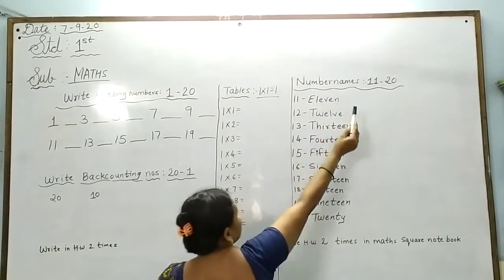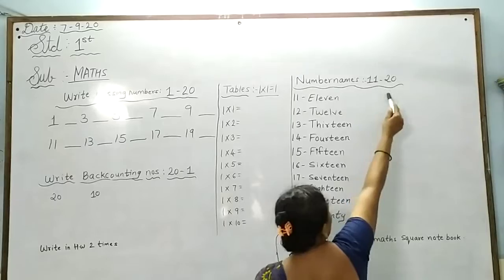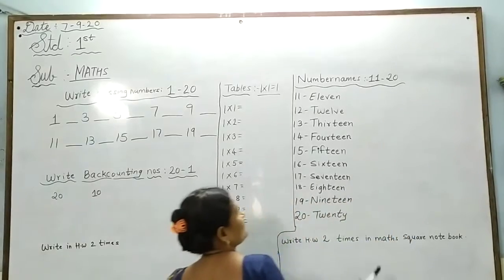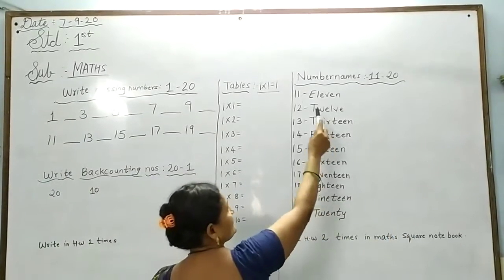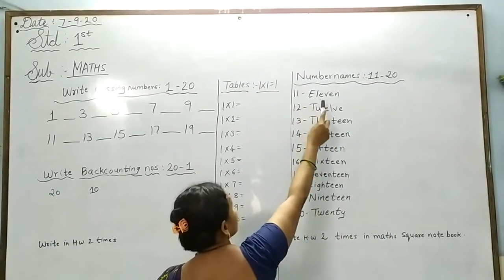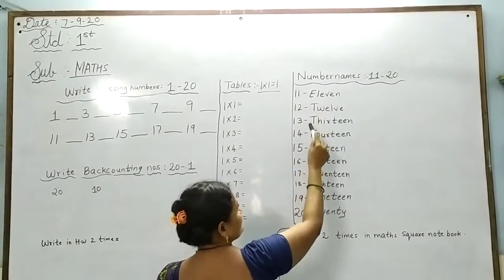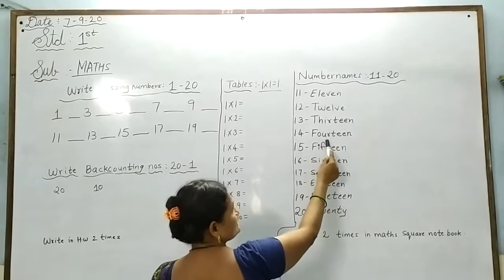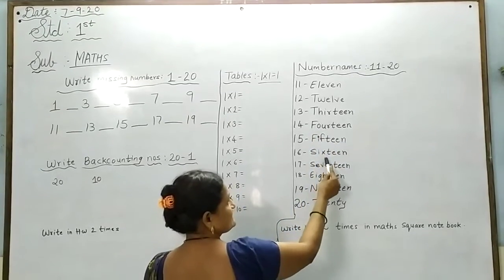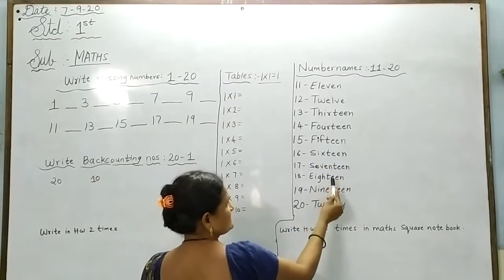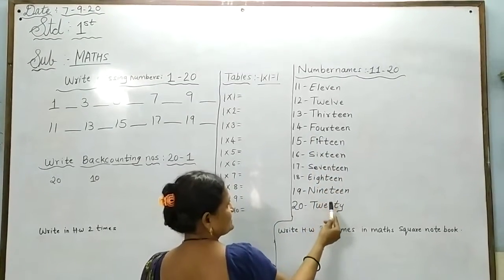Numbers are 11 to 20. The numbers are: 11, 12, 13, 14, 15, 16, 17, 18, 19, 20.